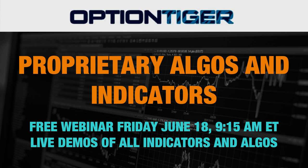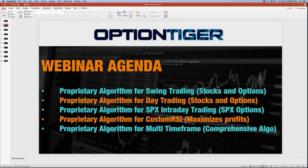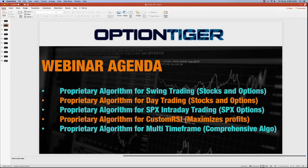There are five algos we'll look at today. There's a proprietary algorithm for swing trading, and the swing trading and day trading algos act like scanners. There is a proprietary algorithm for SPX intraday trading only — it calculates the ticks right from the moment the market starts and is only applicable for intraday trading. Then we have a custom RSI, which is a neat little tool that helps you stay in a winning trade and tells you when to get out — it's an early warning indicator.